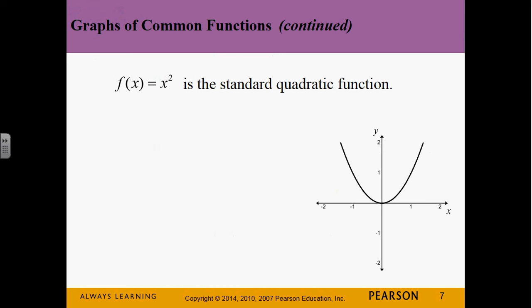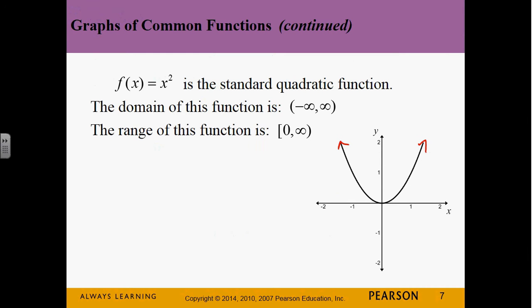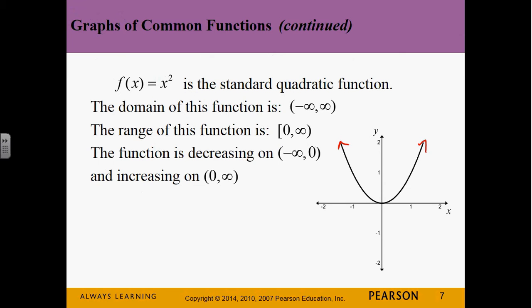Now x squared — a parabola. The domain is negative infinity to positive infinity. The range, just like with absolute value, starts at zero and goes up. It's decreasing from negative infinity to zero and increasing from zero to positive infinity. x squared is an even function.